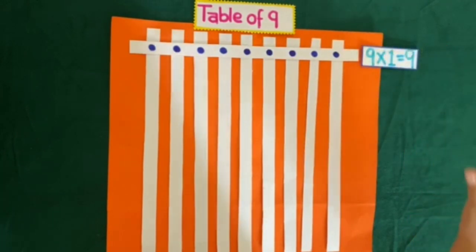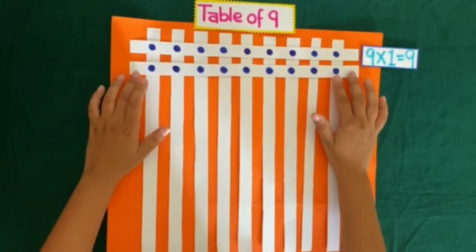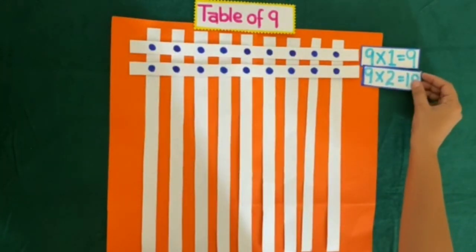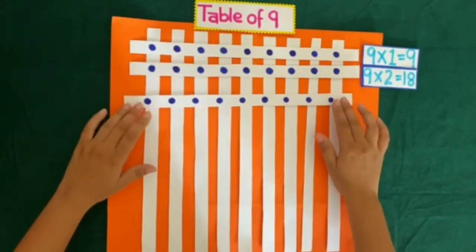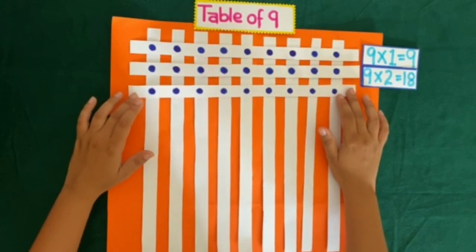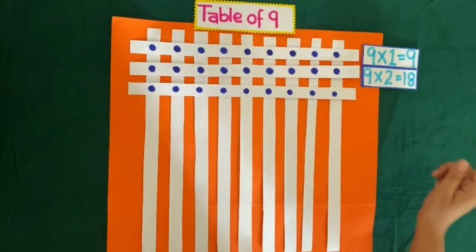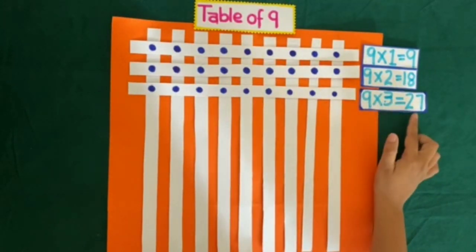So if I place another horizontal strip, we get 9 more intersection points. So 9 plus 9 is equal to 18. So 9 twos are 18. If we place another strip, then intersection points increase to 18 plus 9, 27. So 9 threes are 27.